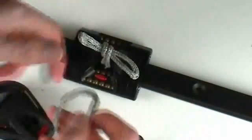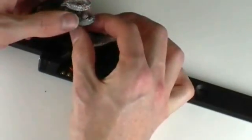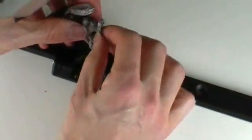With this third Dyneema link we feed it through the Series 30 Orbit Block as shown. Then feed the block and link onto the car.